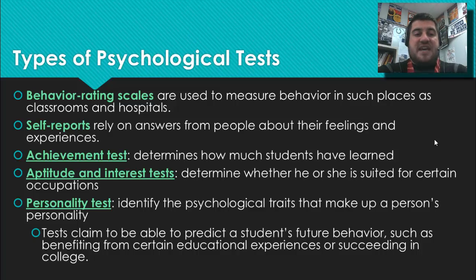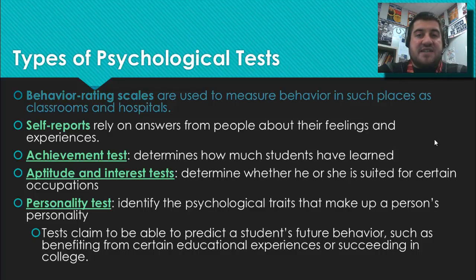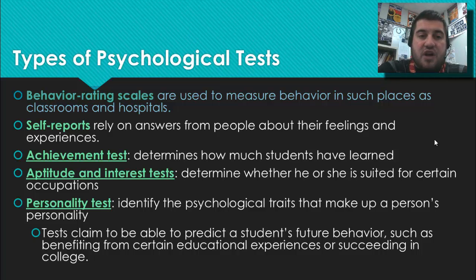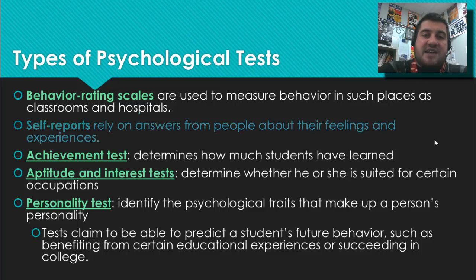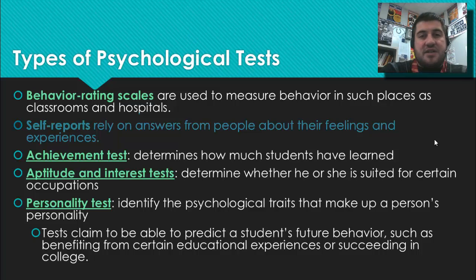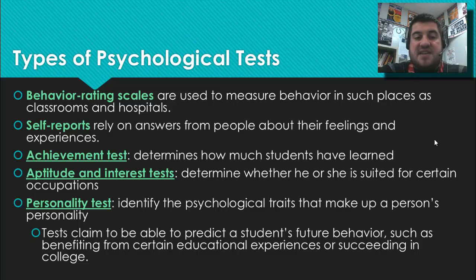More types of psychological tests: behavior rating scales are used to measure behavior. For example, doing naturalistic observation at a daycare and counting how many times a child hit another child would be a behavior rating scale. A self-report relies on people giving their own feelings and experiences, though its validity has been called into question. The three types of tests are achievement tests, aptitude and interest tests, and personality tests.